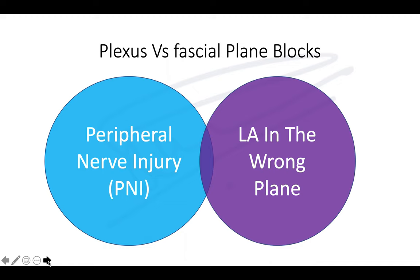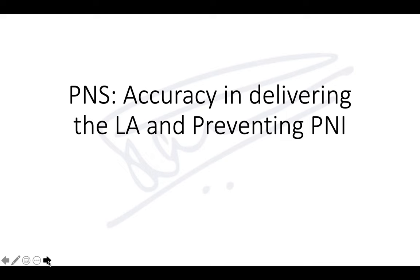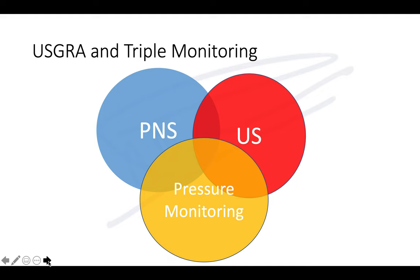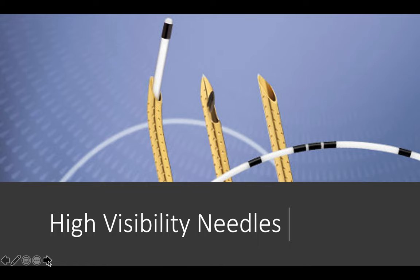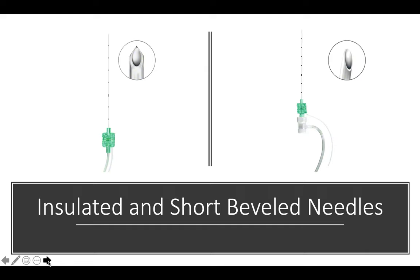For plexus and fascial plane blocks, avoid peripheral nerve injuries and injecting into the wrong plane. With ultrasound-guided regional anaesthesia, some use triple monitoring: ultrasound for visualizing structures, peripheral nerve stimulation to stimulate nerves, and pressure monitoring to ensure opening pressures are below 15 psi. You need the right equipment — good ultrasound, good nerve stimulator, possibly nerve locators, and high-visibility needles like Sonoplex needles with grooved tips. To prevent nerve injury, use insulated short-bevel needles or 2-tip bevel needles, not sharp hypodermic needles.